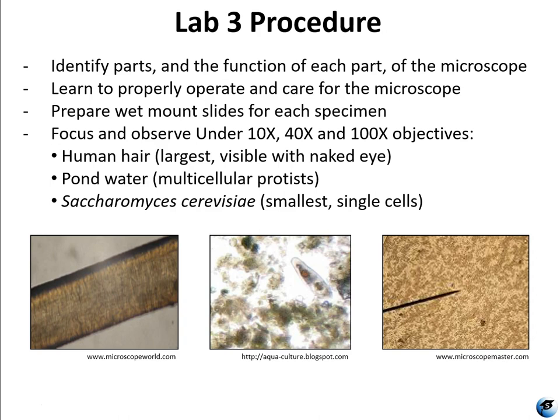For the lab three procedure, there's only one procedure. Make sure you can identify the parts of the light microscope and know how each one functions. You're going to learn how to use the microscope, how to take care of it, and what to do when you put it away — clean the lenses, wrap the cord, drop the stage, leave it on 10x. We'll go through all of this when we're together in class. You are going to prepare wet mount slides for the pond water specimen and for the yeast cells, then focus and observe under all three magnifications.